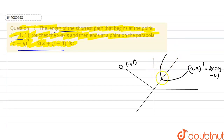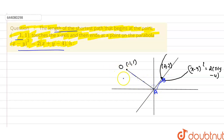The key point on the parabola is (2, 2). The shortest path is O → A → B, where A is on the x-axis and B is the point (2, 2) on the parabola. So O-A-B is the shortest path.